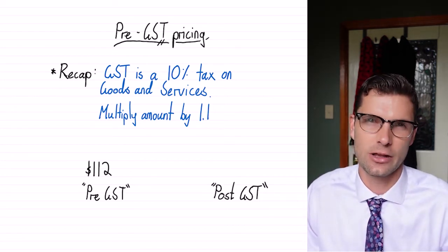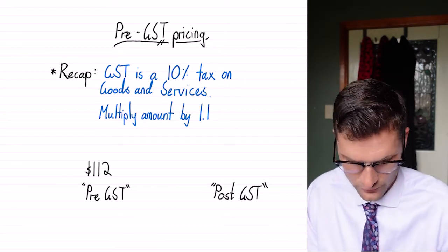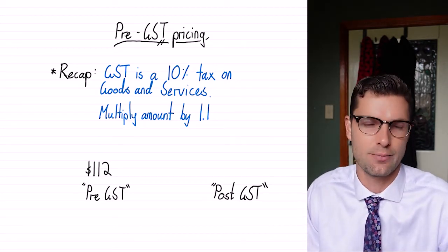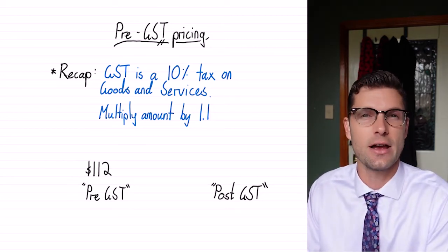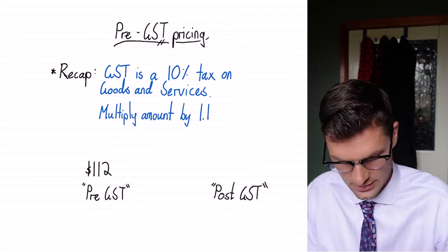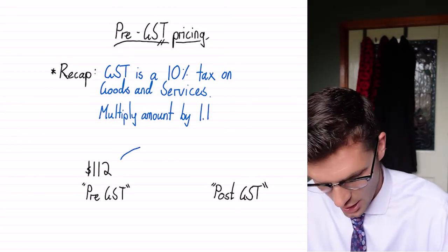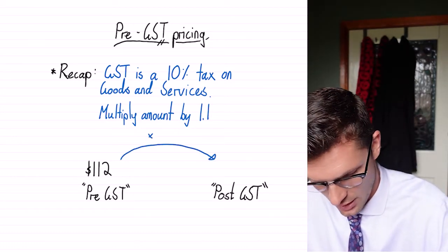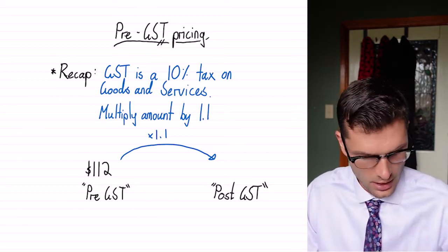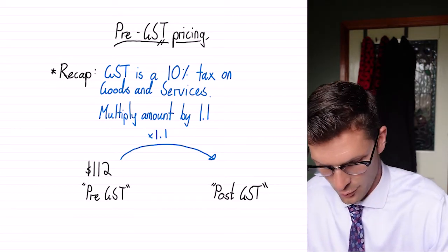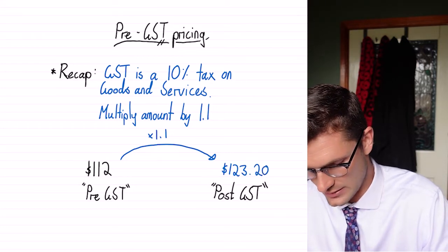So we're just gonna look at a really quick example here. This $112 here is the pre-GST price. So to find the sale price, or the price the consumer pays, or the post-GST price, we've gotta just multiply this by 1.1, and for this example that is equal to $123.20.